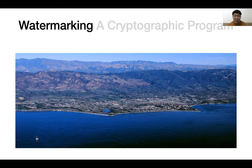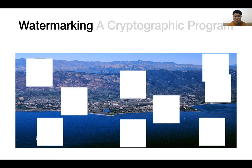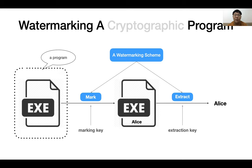A watermarking scheme can embed some information into a digital object without changing it too much. Also, it should be hard to remove the embedded information in a watermarked object without damaging it. In this talk, we focus on watermarking schemes for programs. Formally, it consists of two algorithms: the marking algorithm and the extraction algorithm.